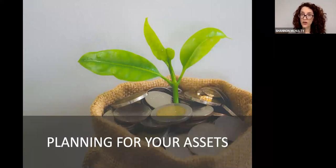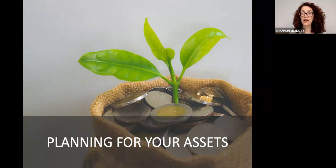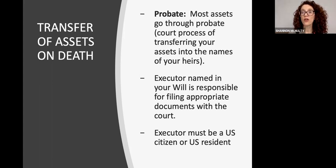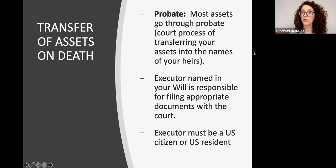The next section is planning for your assets. When somebody passes away, their assets go through what we call probate — the court process of transferring assets into the name of your heirs. The probate court appoints an executor to administer that process, generally somebody named in your will, who is in charge of filing documents with the court, filing tax returns, and making sure assets go to the people you want them to go to.